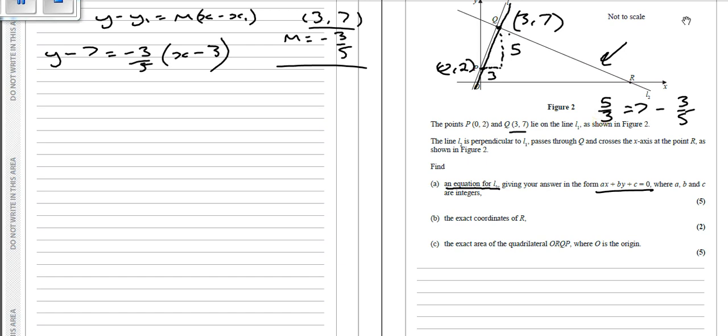And they want it in the format ax plus by plus c equals 0, which means they don't want any fractions. So the first thing we do to make it slightly easier on ourselves is to get rid of this divided by 5. So we times the other side by 5, then we're going to multiply this out here. So that's going to be 5y minus 35 equals minus 3x plus 9. And then they want it in this format here, so let's get everything over to make x positive. So that's going to be 3x plus 5y minus 44 equals 0. And 5 reasonably straightforward marks if you've done your revision.